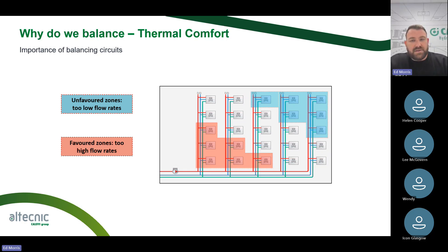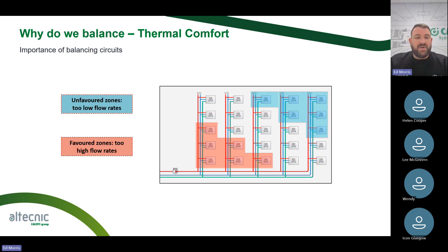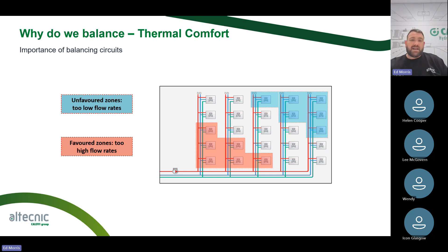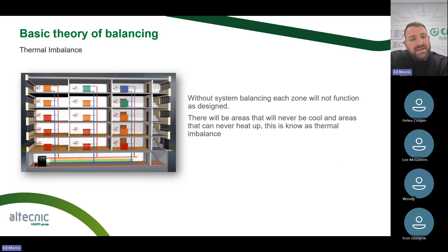There are ways we can counteract this — we need to balance the system. Generally you will see issues in a domestic property: if your boiler is situated in the kitchen, the kitchen and living room will probably get really good heat, but a bedroom further away from the boiler may not get as hot while the radiators downstairs are really warm. We need to slow the water going to the closer zones and push it to those more distant zones. Without system balancing, each zone will not function as designed, and there will be areas that never cool and areas that never heat up — this is what we know as thermal imbalances.